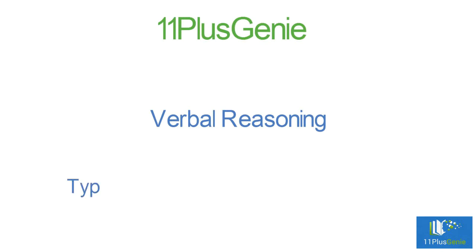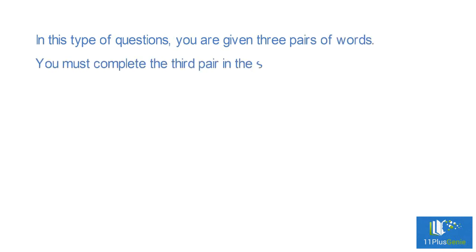Verbal Reasoning Type 6: Apply a Rule to Form a New Word. In this type of question, you are given three pairs of words. You must complete the third pair in the same way as the first two pairs.